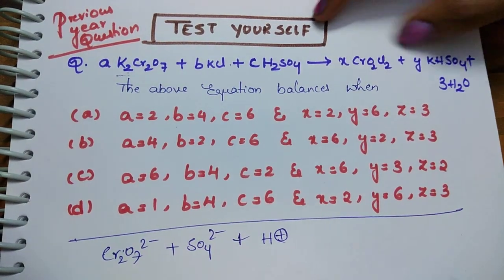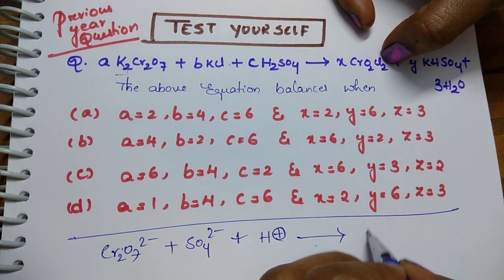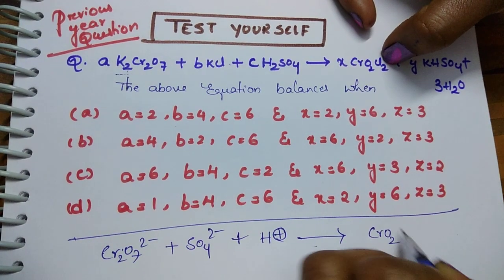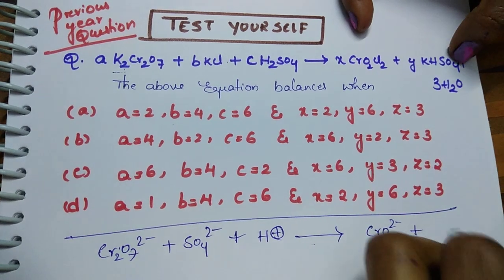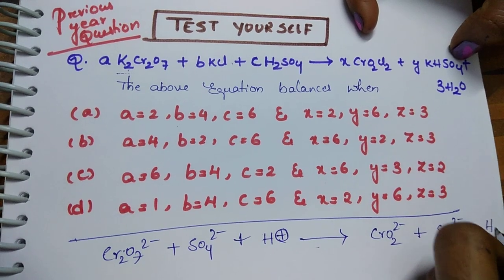This you have to take, it is taking place in H^+ ion. Then CrO2Cl2 dissociates as CrO2^+ plus Cl2, this one is KHSO4, SO4^2-, plus H2O.